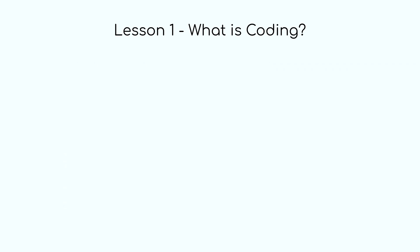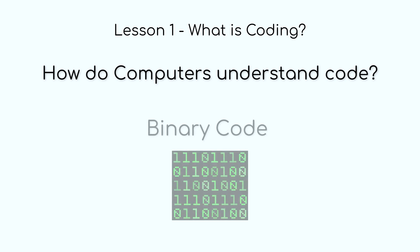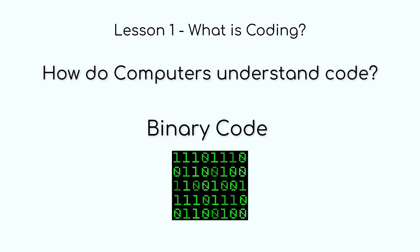Now, you might be wondering, how does the computer actually understand all of this code? The answer is simple: binary. At the most basic level, computers only understand two things, on and off. These are represented by numbers one and zero, also known as binary code.